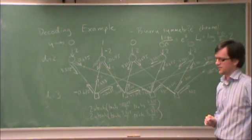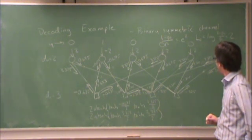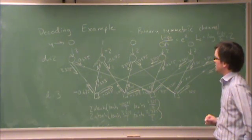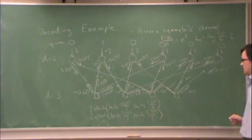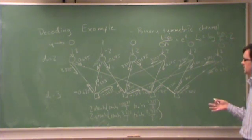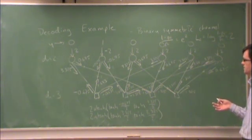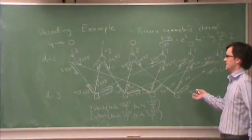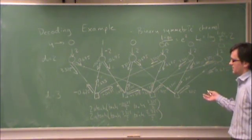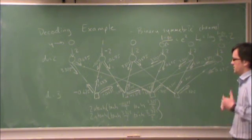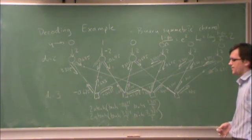The remaining checks proceed similarly. You can see even in a simple example like this, the calculations get pretty complicated. But it's a fairly easy thing to automate. All you need to do is run this for hundreds and hundreds of iterations and it would either converge to a bit. In this example it might or might not converge to a codeword. In larger examples with thousands of bits, it will either tend to converge to a codeword or it will fail.